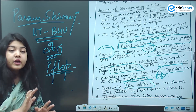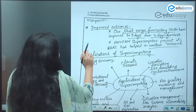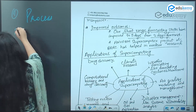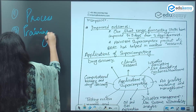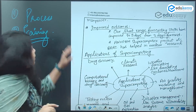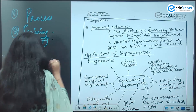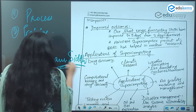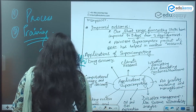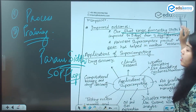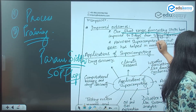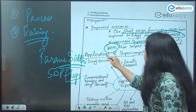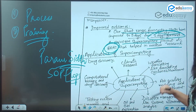It has so many elements — one is the process, and second is the training which improves manpower. What are the improved outcomes of Param Siddhi? Short-range forecasting skills have improved from five days to two days forecast. The Anupam supercomputer project is currently at BARC — Bhabha Atomic Research Center — to help in nuclear research.